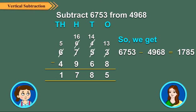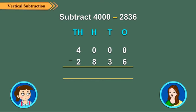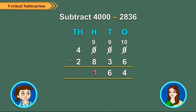Children, you also know how to subtract with 0's. Let us find 4000 minus 2836. You can do this by regrouping directly and then subtract in the following order. 10 1's minus 6 1's is equal to 4 1's. 9 10's minus 3 10's is equal to 6 10's. 9 100's minus 8 100's is equal to 1 hundred.